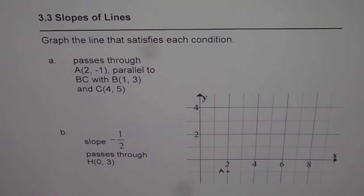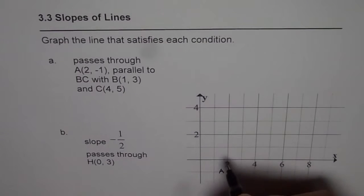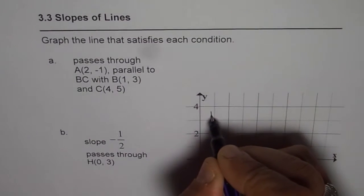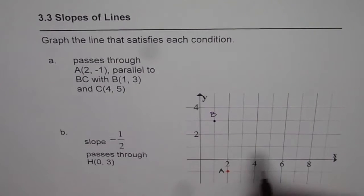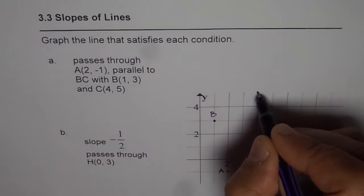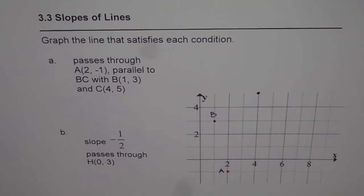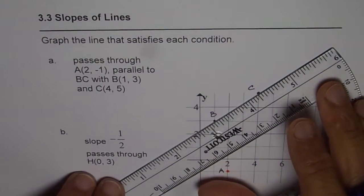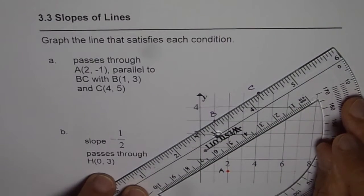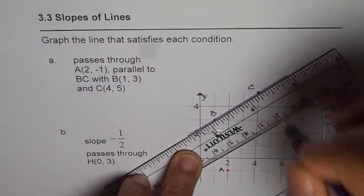It is parallel to BC where B is (1, 3) and C is (4, 5). Let me connect these points. We have to draw a line through A which is parallel to BC. So this is BC for us.